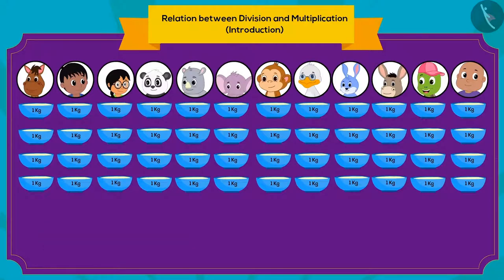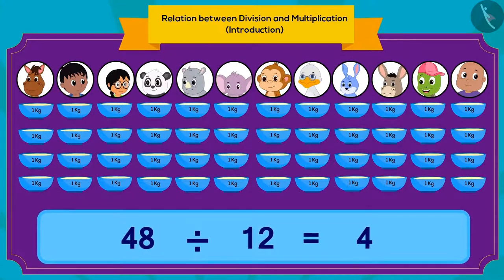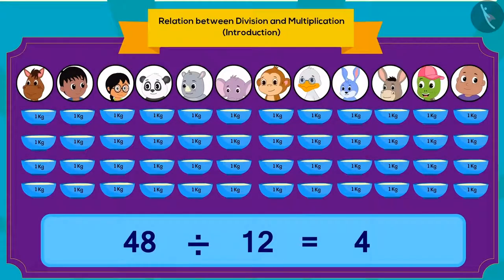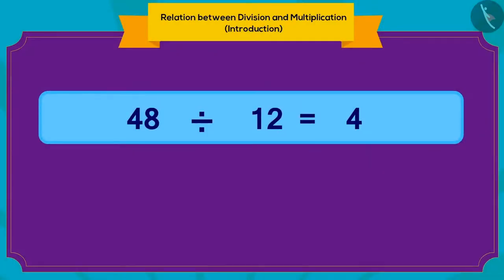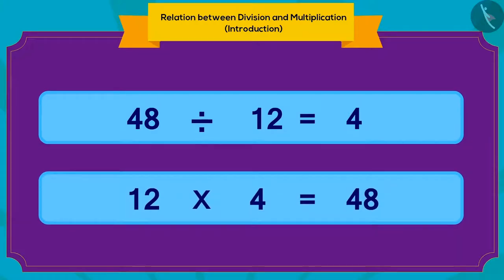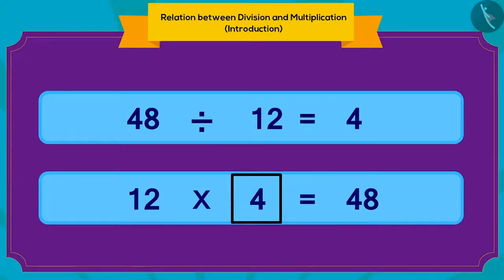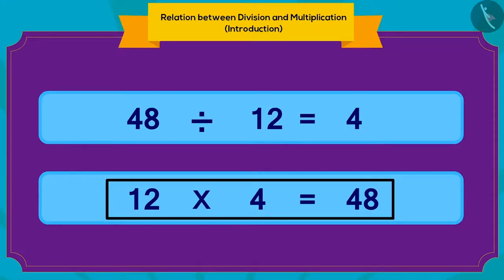How can we write this using division? We can write it like this. Children, can you write this division in the form of multiplication? You can pause the video and find the answer. You have found the right answer! If there are 12 people and each person gets 4 kg of kheer, then the total quantity of kheer is 48 kg. 12 multiplied by 4 is 48.